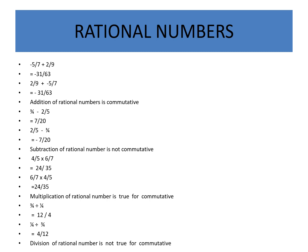For subtraction: 3/4 − 2/5 = 7/20, but 2/5 − 3/4 = −7/20. The answers are different, so subtraction of rational numbers is not commutative. Multiplication gives the same answers, so it is commutative. Division gives different answers, so division of rational numbers is not commutative. Please take more rational numbers and try all four operations to verify.